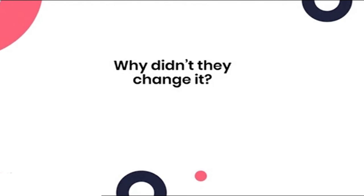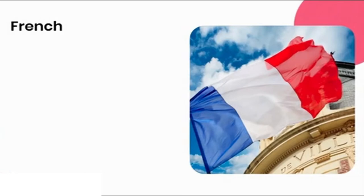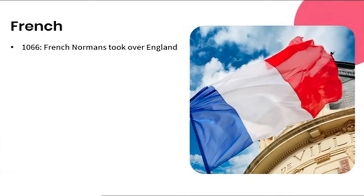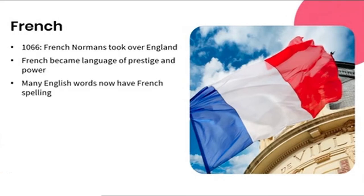You may be thinking: why didn't they change the spelling along with the pronunciation? That is indeed a very good question. Unfortunately, by the time the pronunciation shift was complete, the spelling had already been finalized. Now, some inconsistencies in English spelling are a result of the influence of French. In 1066, the French Normans took over England, and French became the language of prestige and power. As a result, many English words now have spellings that look like French.